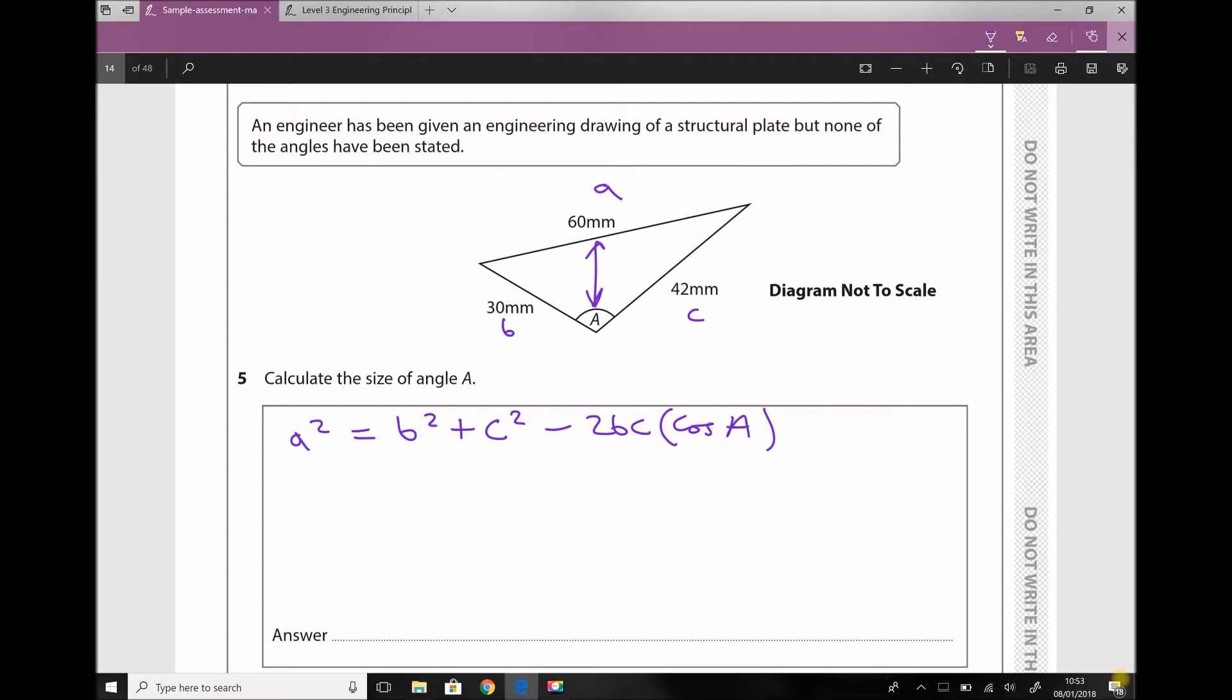Next, let's put some numbers in here because it makes it easier to work with the equation. We're going to work in millimeters, so we've got 60 squared equals 30 squared plus 42 squared minus 2 times 30 times 42 cos A.